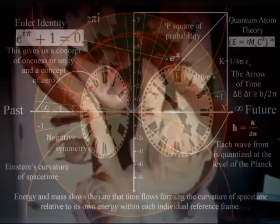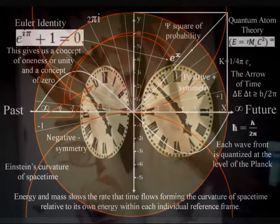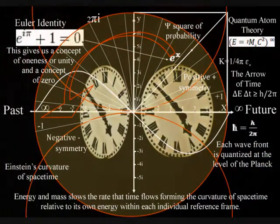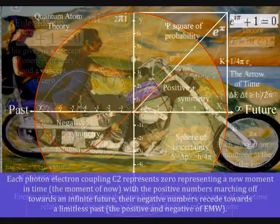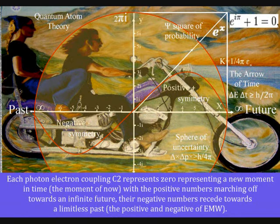In this theory, the zero represents zero time, or t equals zero, the moment of now, formed by light interacting with matter. The zero represents an infinite branching point, with the positive numbers marching off, forming a potential future with a square of probability. The negative numbers representing the positive and negative of electromagnetic waves.